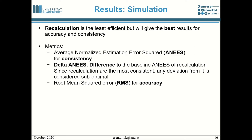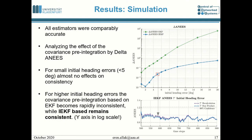We use the following metrics to judge accuracy and consistency. First, the average normalized estimation error squared (ANES) is an indicator of consistency. The delta ANES is the difference of the ANES of the recalculation versus the covariance pre-integration. Since we consider recalculation to be the best reference, any deviation of the ANES from the recalculation value is considered suboptimal. For accuracy we use the root mean squared error (RMSE). In simulation we found that all estimators are comparably accurate.